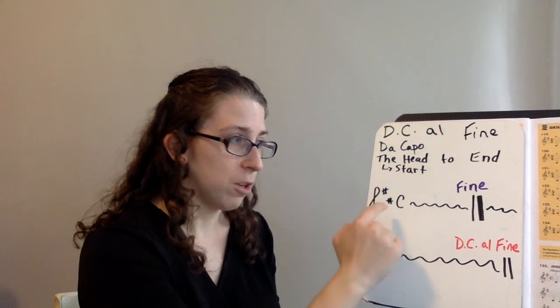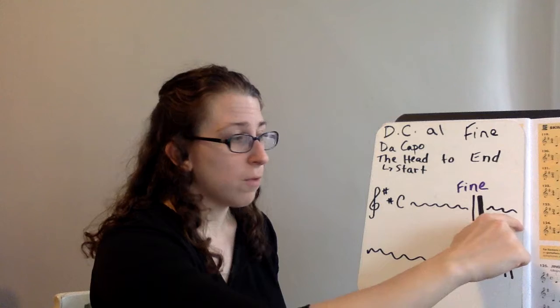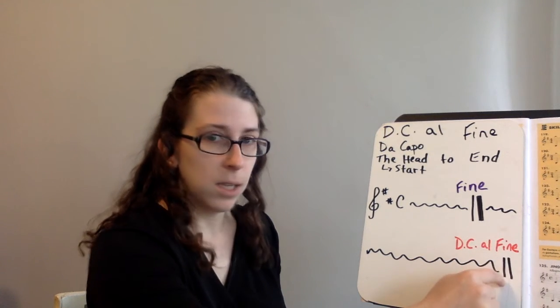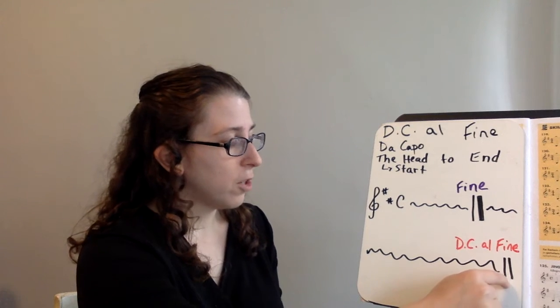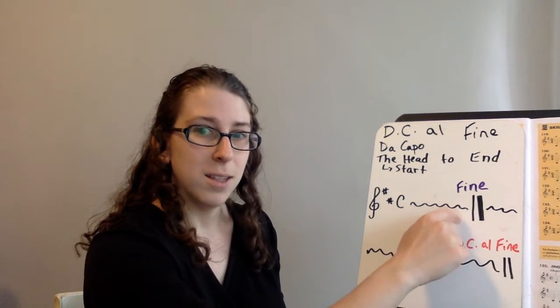I'll walk you one more time. We start at the beginning. We go all the way through. We breeze past our fine the first time and go all the way until it says DC al fine. Then we follow the instructions right back to the beginning and play until the end.